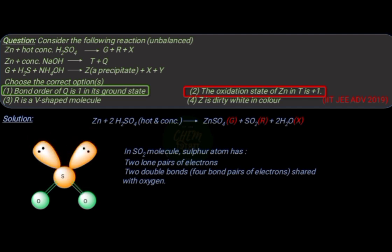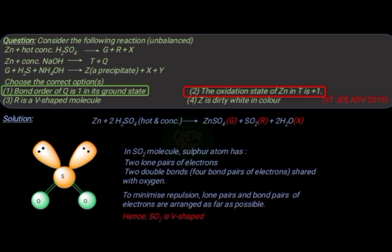All these are arranged in space so that the repulsion between them will be minimum. To remain at maximum distance from each other, the bond pairs are bent to form a V-shaped molecule. Hence, option 3 is correct.